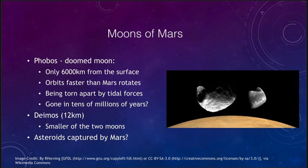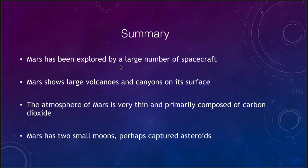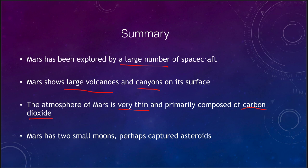To summarize what we've covered on Mars: a large number of spacecraft have visited Mars and more are planned. We see large volcanoes and large canyons on the surface — very large features compared to what we see on Earth, especially for such a small planet. The atmosphere of Mars is very thin and is primarily carbon dioxide, much like Venus's atmosphere. Mars has two small moons which are likely asteroids that Mars captured in the past. That concludes our lecture on the geology and atmosphere of Mars. We'll be back next time for another topic in astronomy.